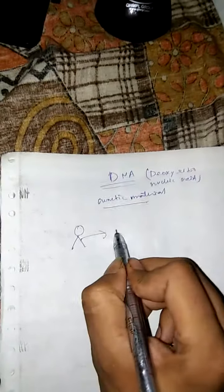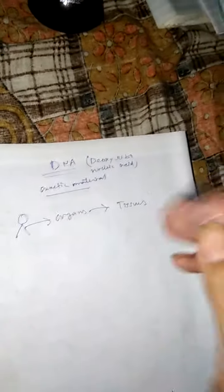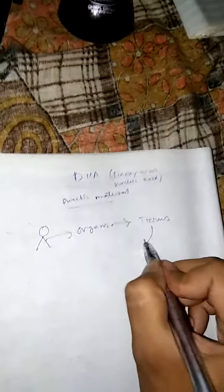Actually, it is a very small molecule and where it is found. It is found in any living organism. I am just taking the example of human beings. Human beings are consisting of organs, and organs are consisting of tissues. Tissues are made up of cells.